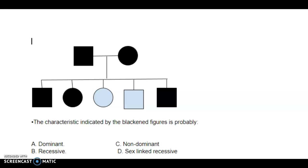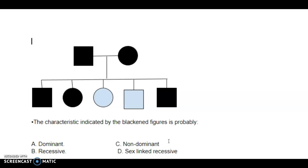We'll take a look at our day 64 bell ringer. We have a pedigree here — it says the characteristic indicated by the blackened figure is probably: dominant, recessive, non-dominant, or sex-linked recessive. Here's a test tip: recessive and non-dominant mean pretty much the same thing, so on a test, if two answers mean the same thing, you can probably eliminate both. So let's look at this and see what we can figure out.